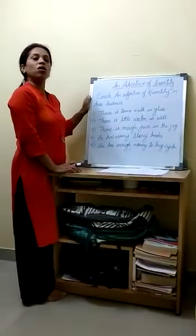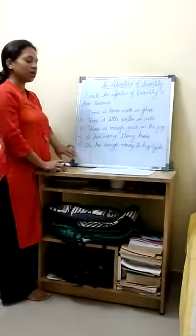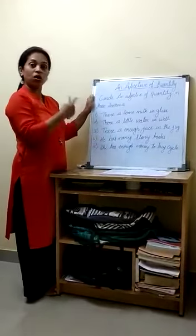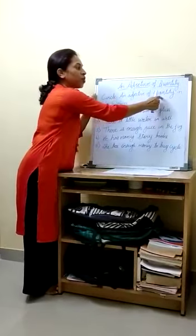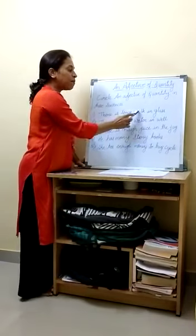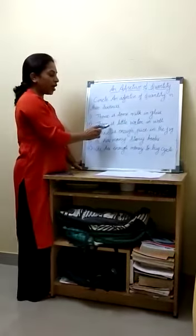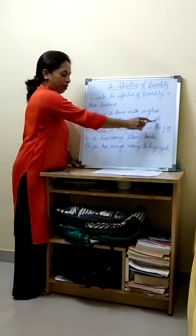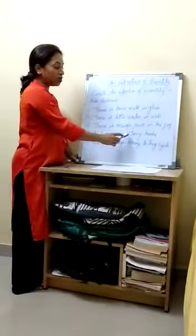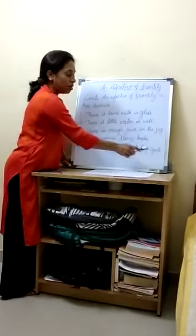Now let us circle the adjective of quantity in these sentences. Together we will circle them. First I will read out all the sentences for you, then we will circle the adjective of quantity together. The sentences are: there is some milk in the glass; there is little water in the well; there is enough juice in the jug; he has many story books; she has enough money to buy a cycle.